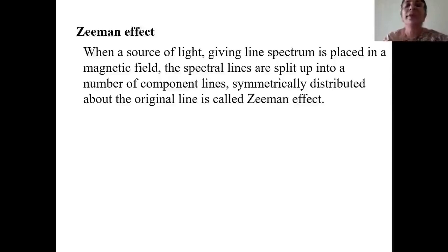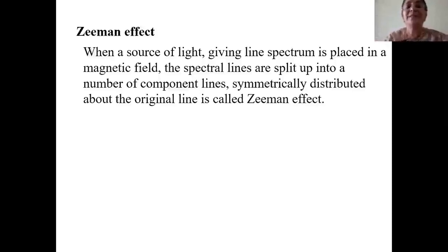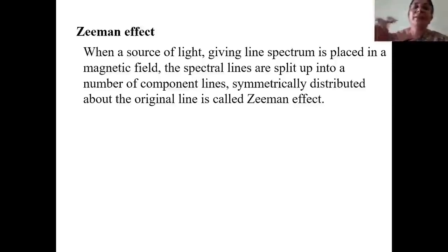His intention was to study how spectral lines are impacted when the lamp is placed in a magnetic field. If a lamp gives a continuous or band spectrum, you cannot distinguish the difference when a magnetic field is applied. But if you choose a lamp giving a line spectrum, the sharp lines make it easy to observe whether new lines appear.